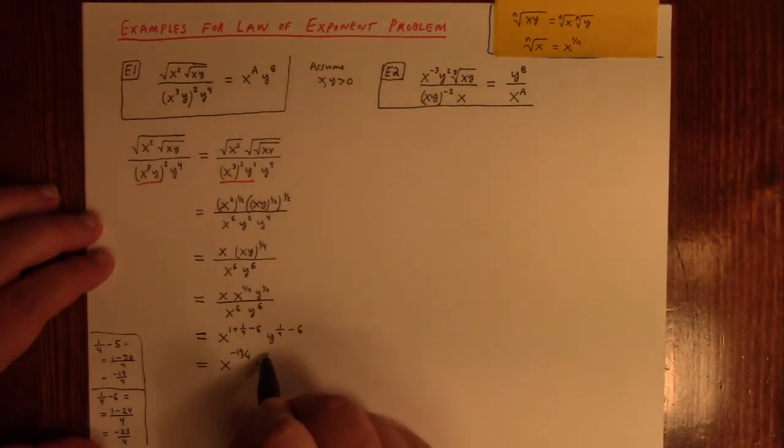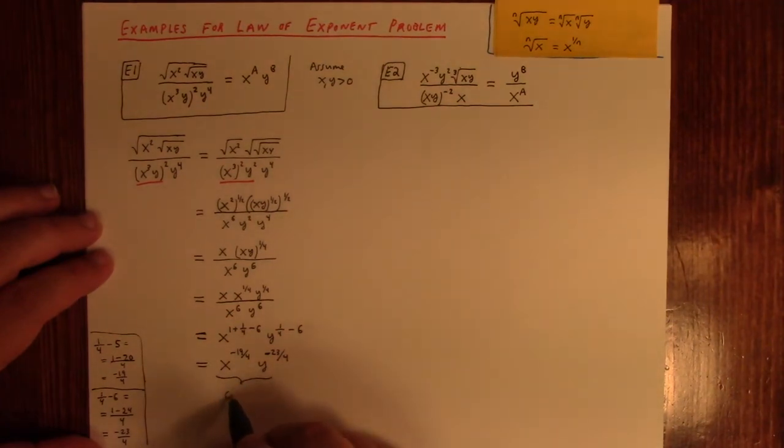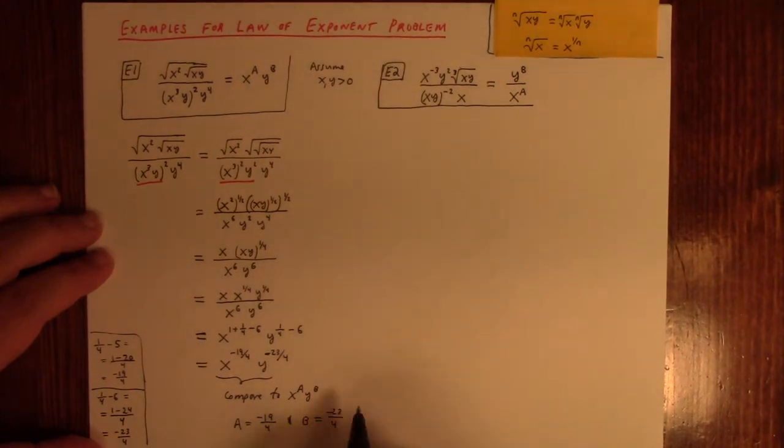Now, some of the problems that you have in, like, a textbook or something will say simplify and write your answer with positive exponents. But you notice that's not the format here. The goal is to simplify until you have it in the form x to the a, y to the b. Now, I have that, right? So, I can take this, and I can compare to x to the a, y to the b. And you can read off from that that a, in this case, is minus 19 over 4. And b is equal to minus 23 over 4. And there you go. That would be the answer for that part.